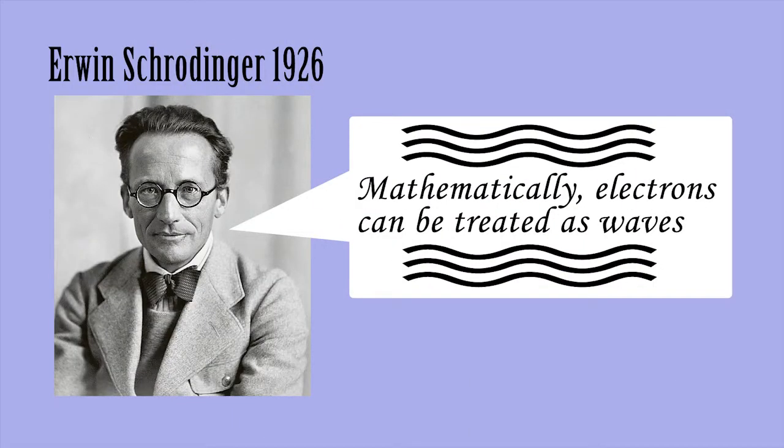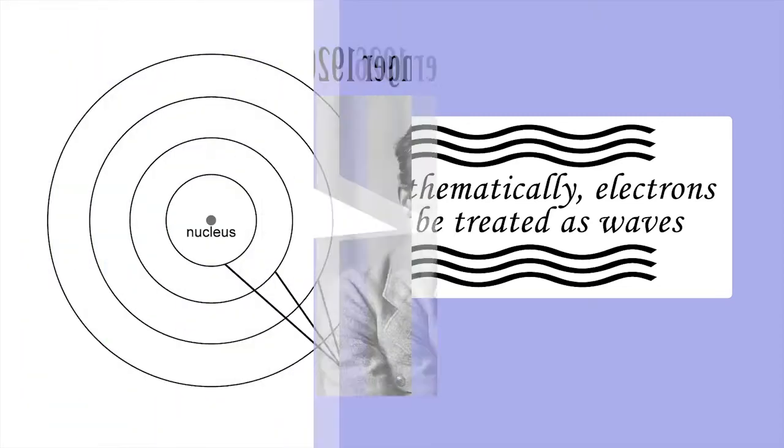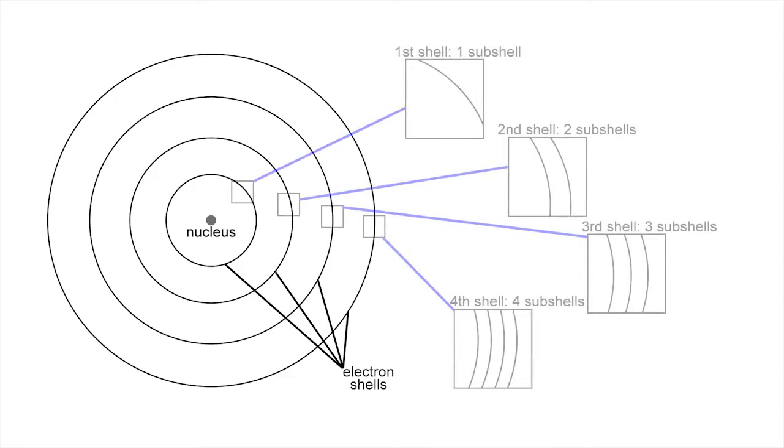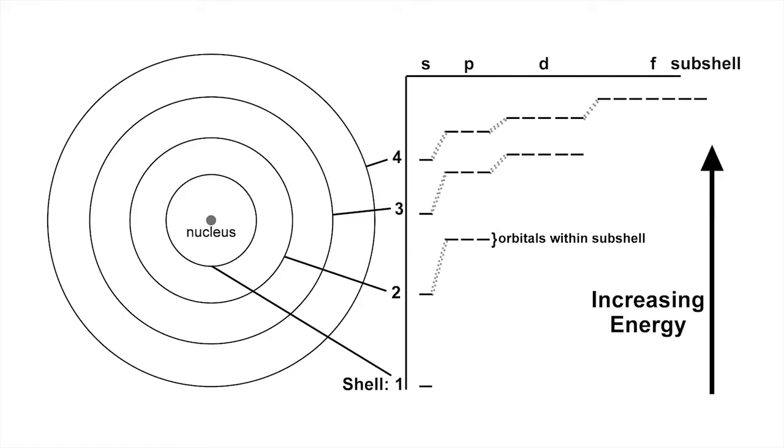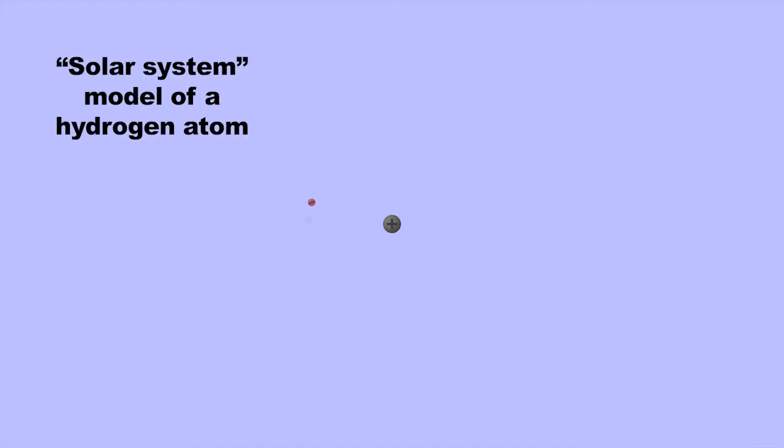In 1926, Erwin Schrödinger developed an equation that treats electrons as wave-like phenomena. On this model, electron shells can themselves be subdivided into sub-shells, each of which is associated with a number of orbitals, resulting in a more detailed description of electronic energy levels.